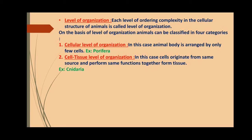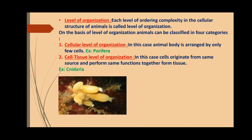On the basis of level of organization, animals can be classified into four categories. Number one: cellular level of organization — in this case the animal body is arranged by only a few cells, like Porifera. For example, Scypha or sponges from phylum Porifera — all the members of Porifera belong to this criteria.